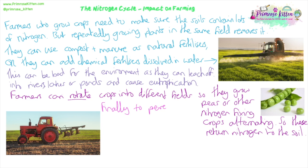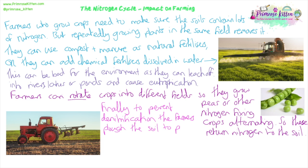Another thing farmers need to do is prevent too much denitrification. Denitrification happens in anaerobic conditions, so we need to make sure there's a lot of air in the soil. Farmers plough the soil — those big teeth on the back of the tractor go into the soil, churn it up, get air in there, ensuring good drainage and lots of air gaps so there are no anaerobic conditions and no nitrogen is lost through denitrification.